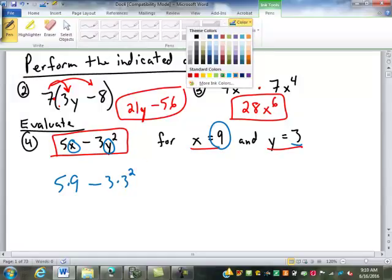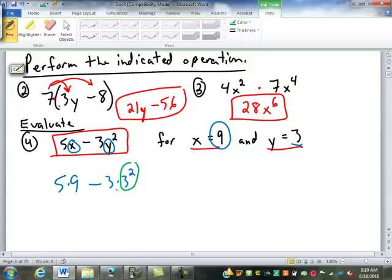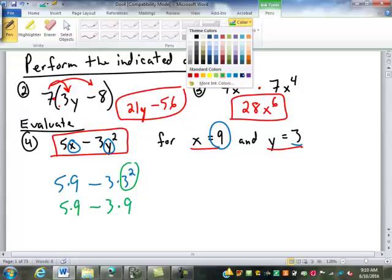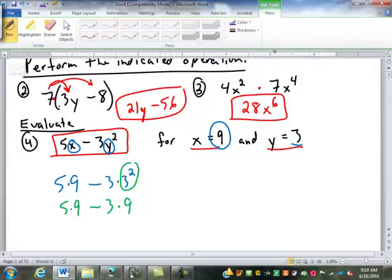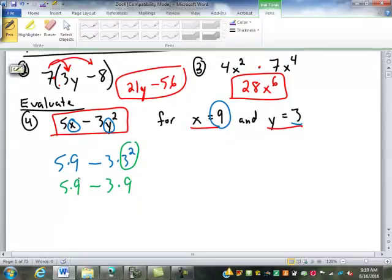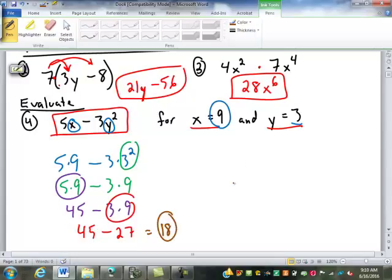And now, order of operations tells us we have to do the exponent first. There's no enclosing symbols. So we do the exponent first. So 5 times 9 doesn't change. Minus 3 doesn't change. Times what's 3 squared? 9. 3 times 3 is 9. Now, no more exponents. So we're on to multiplication and division. There's two multiplications, so we go left to right. 5 times 9 is 45. Then we can do the 3 times 9, which is 27. And we subtract. 45 minus 27 is 18. Any questions on that one?